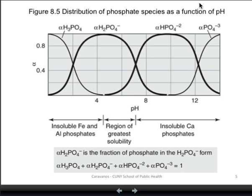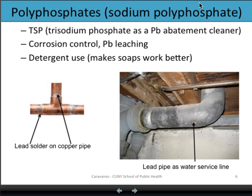Before I get into orthophosphates, let me cover polyphosphates first. Polyphosphates are very integral in lead control. Polyphosphates are added to water supply treatment processes, where they react with lead and make lead less soluble and more difficult to be leached into water. You can see here on the right a lead pipe as a water service line. This is very common in old cities, whether it's Philadelphia, Boston, or New York. Many brownstones were fed with lead service lines. Obviously, the lead can leach into drinking water. This is an example of where you would use polyphosphate water treatment chemicals to seal that lead coating. On the left,